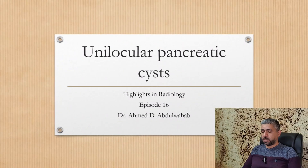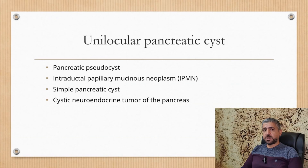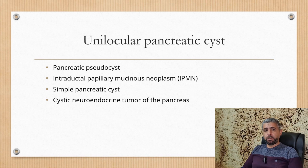In today's episode, we will talk about a pathology that we commonly see in everyday practice: unilocular cystic lesions of the pancreas. There are a lot of pancreatic pathologies. I chose to talk about unilocular cysts because they are important to differentiate from each other and there is a very nice differential diagnosis here. The four main differentials are: pancreatic pseudocyst, intraductal papillary mucinous neoplasm, simple pancreatic cyst, and cystic neuroendocrine tumor of the pancreas.